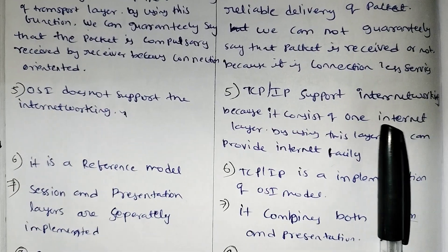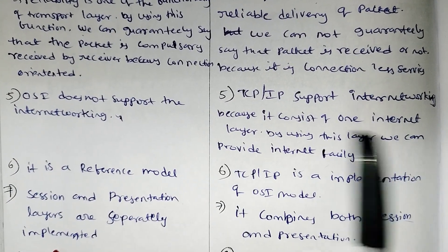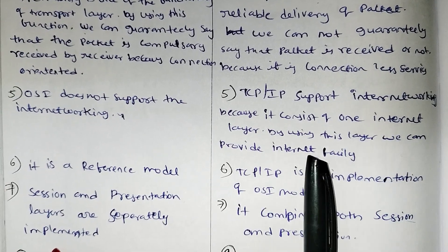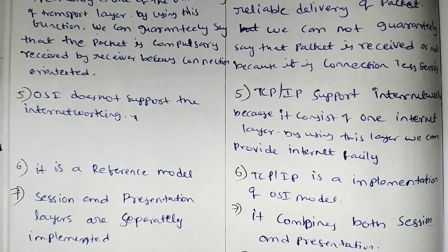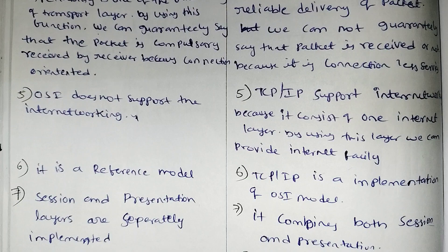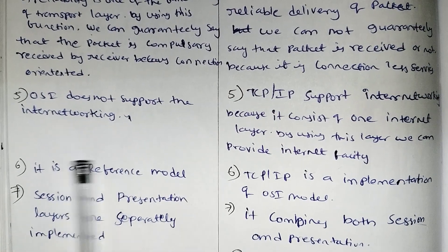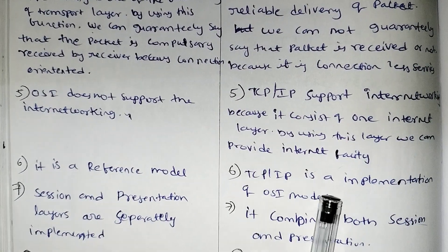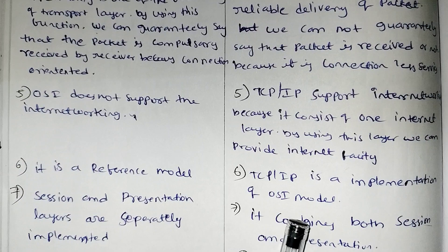TCP/IP supports internet working because it consists of one internet layer. By using this layer, we can provide internet facility. OSI model is a reference model, and TCP/IP is an implementation of the OSI model.